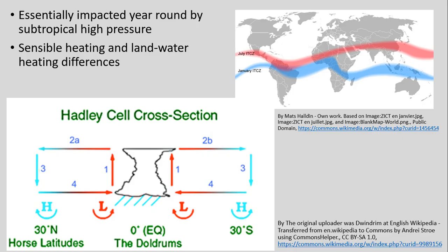The processes driving hot deserts: we're essentially being impacted year-round by the subtropical high pressure of the Hadley cell, around 25 to 30 degrees north and south, which is where we find the large distribution of hot desert climates. There's no moisture in the atmosphere or on the land, so all heat goes into sensible heating. The land heats up and cools off very quickly, as the sun comes overhead then goes down, creating that large temperature range.